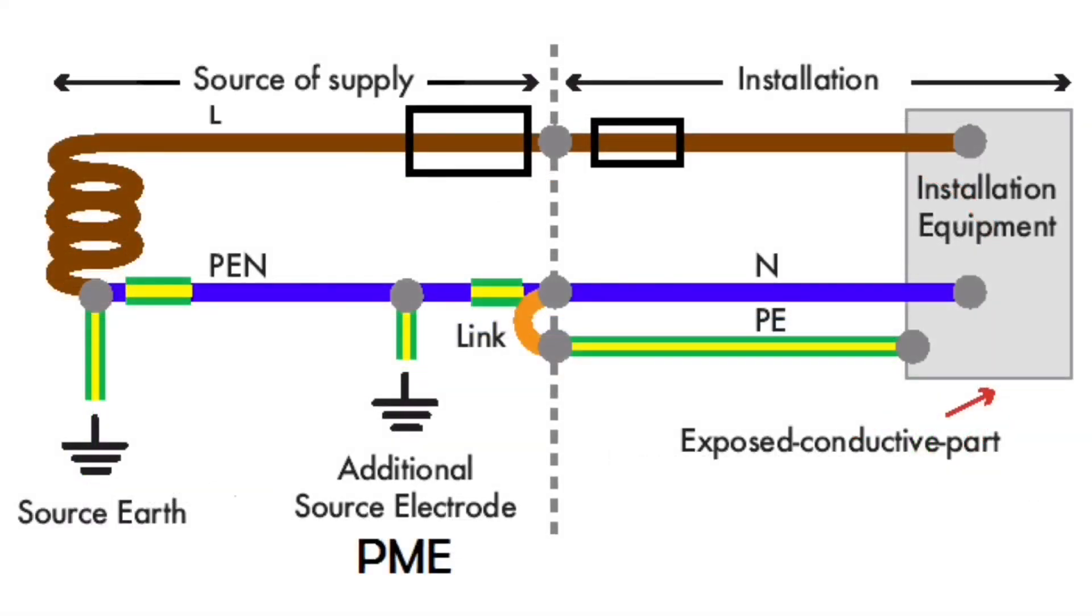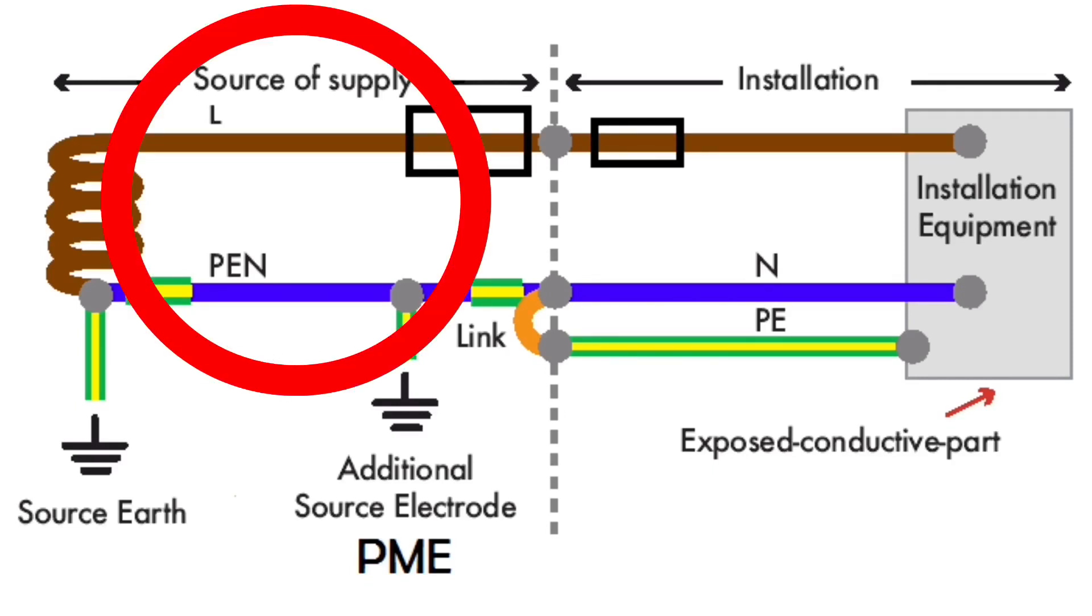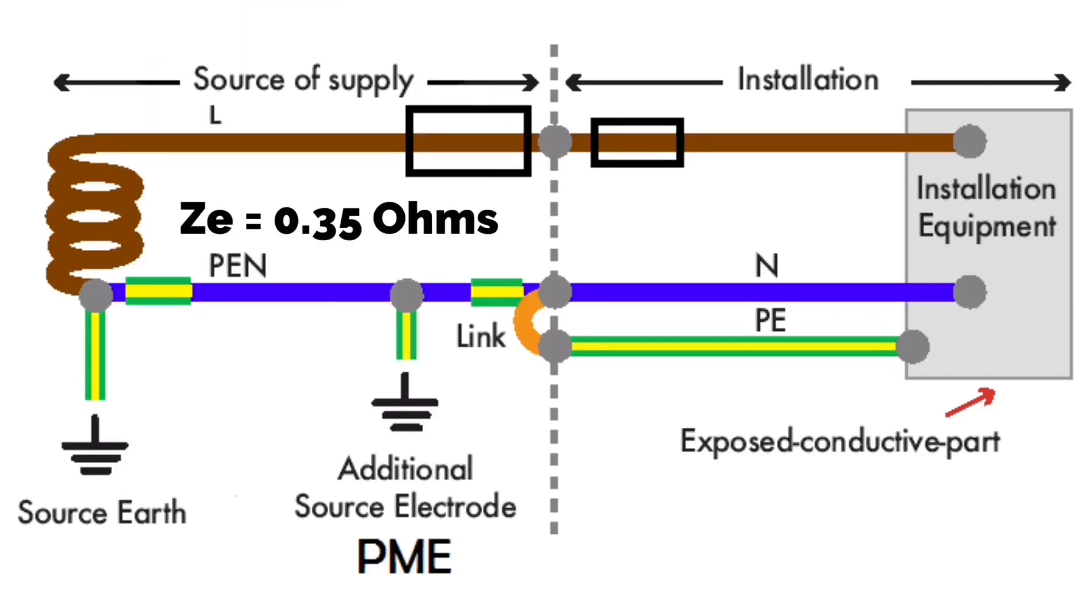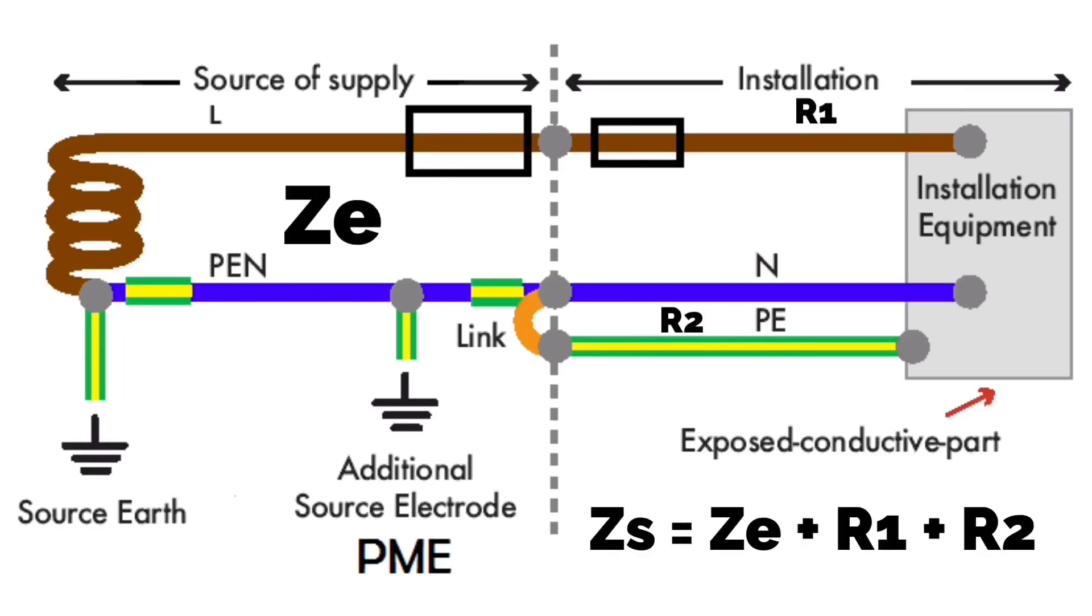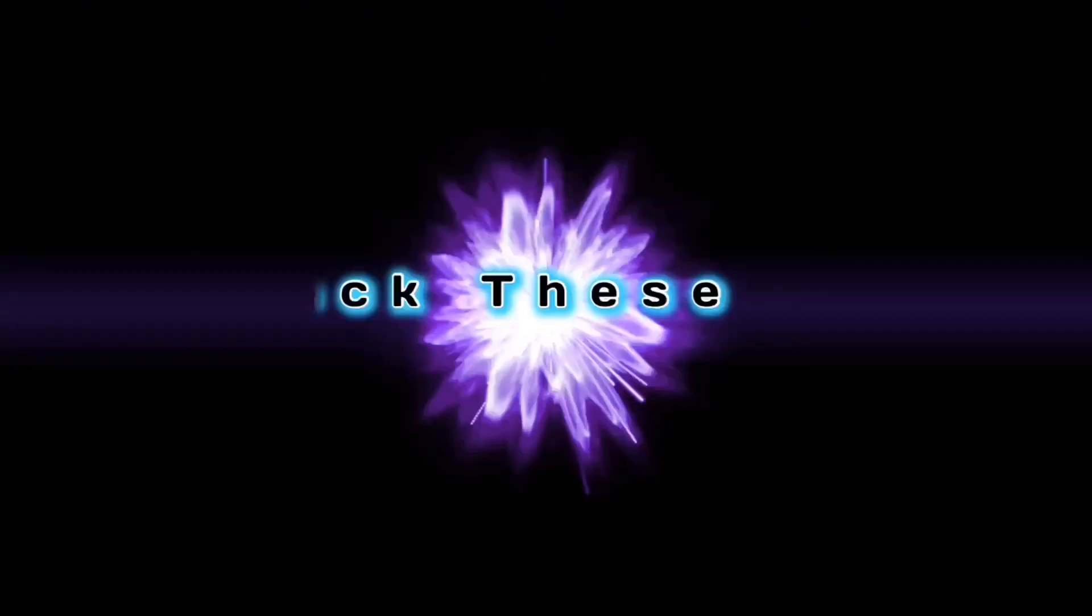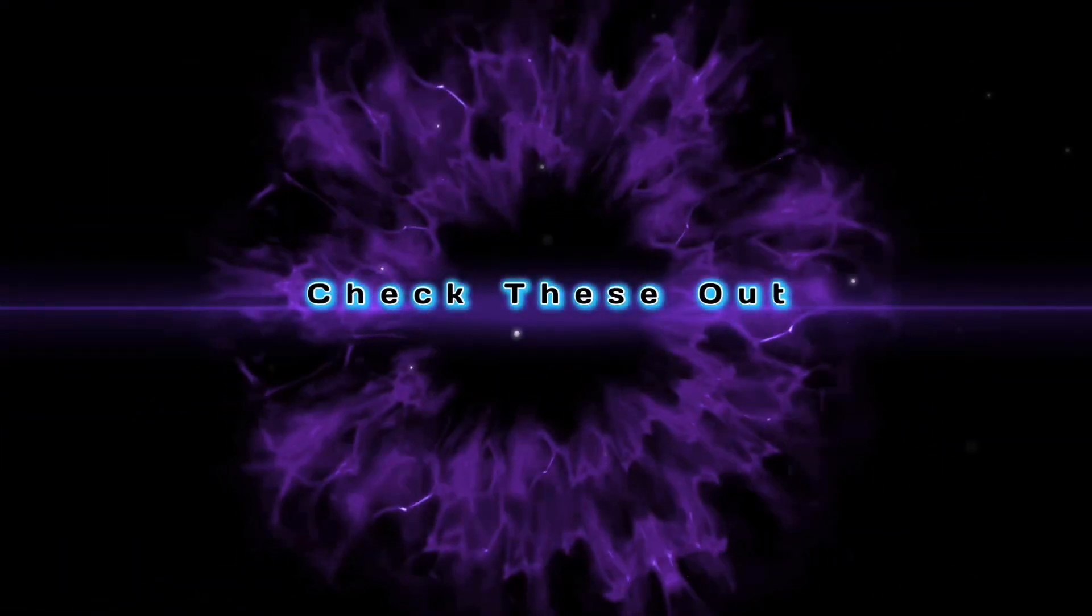This drawing shows a TNCS earthing arrangement, and the supply authority's cable now has a maximum external impedance ZE of 0.35 of an ohm. Total circuit impedance ZS is still ZS equals ZE plus R1 plus R2.